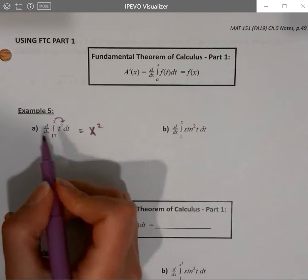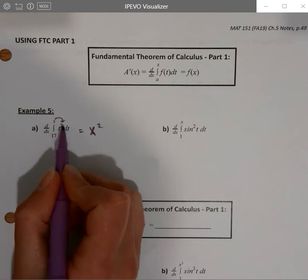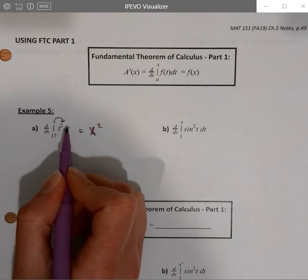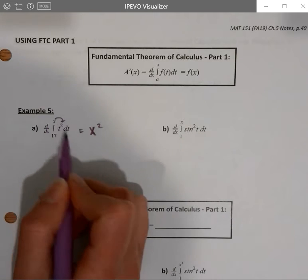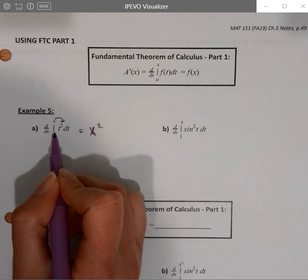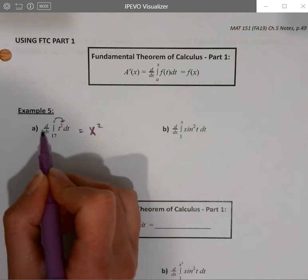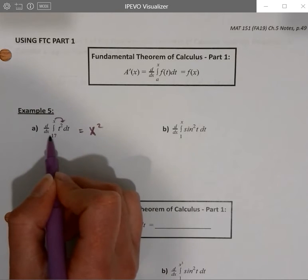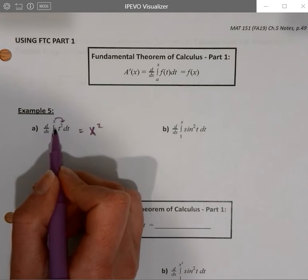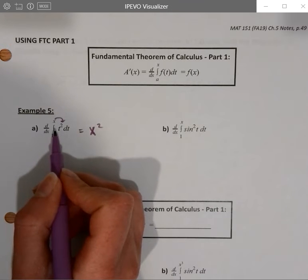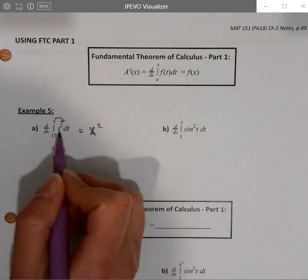So if you think about this again, if I do the antiderivative, get something like t cubed over 3, of course, plug the x in, plug the 17 in, the 17 is not going to matter because when I differentiate it, it's going to be a constant. It's going to go to 0 and my x cubed over 3 is going to differentiate back into 3x squared over 3, which is back to x squared.